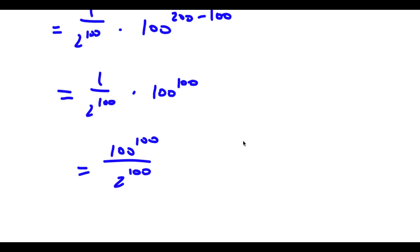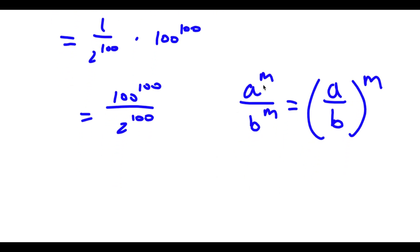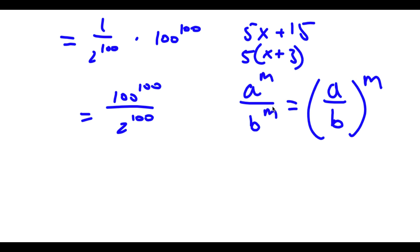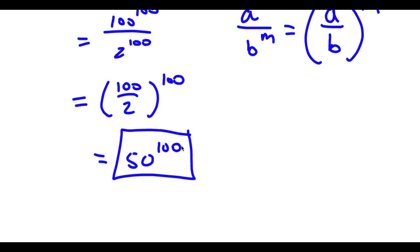Now if I have something in the form a to the power of m over b to the power of m, this is the same thing as a over b to the power of m. So we are factoring out our exponent here because both terms share the same exponent — just like factoring out a common factor such as 5 from 5x plus 15. Both terms share the same exponent, so this would equal 100 over 2 to the power of 100. 100 over 2 is equal to 50, so I have 50 to the power of 100. And this is our answer.